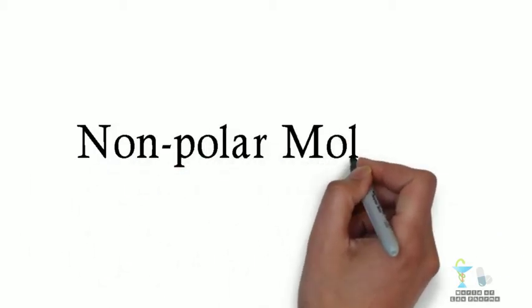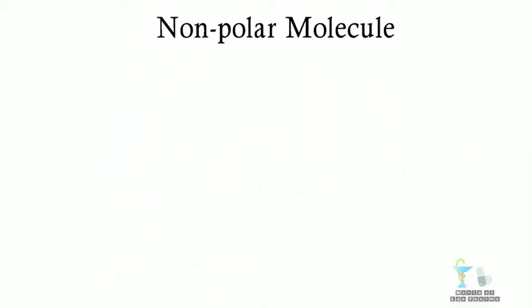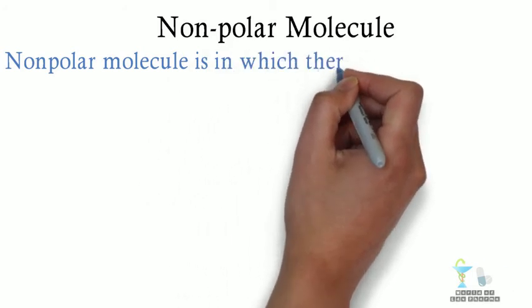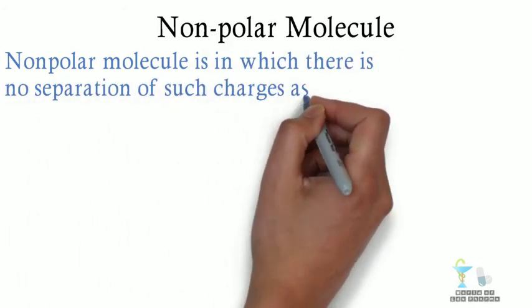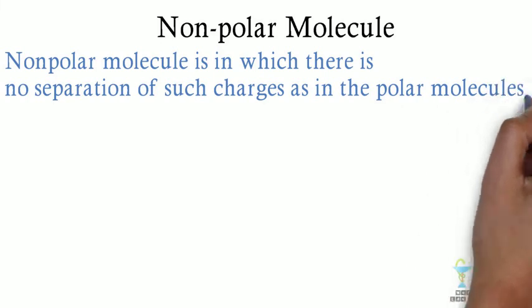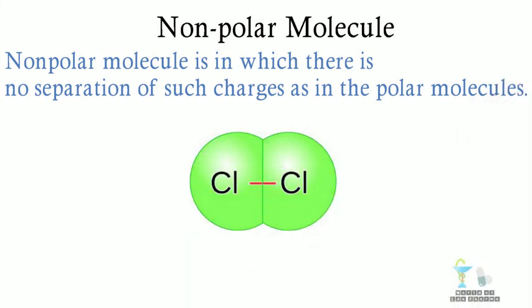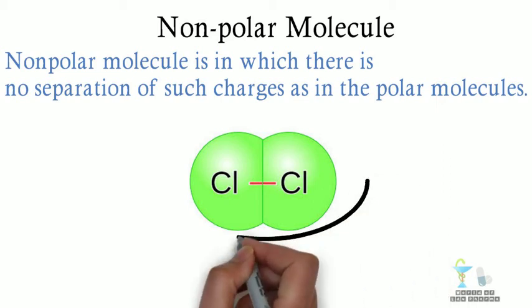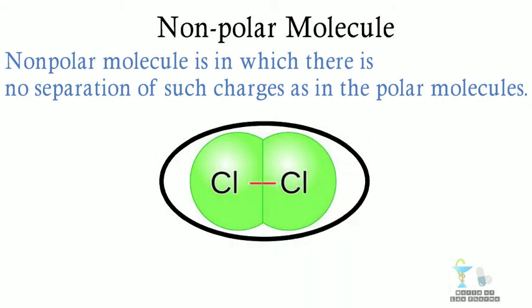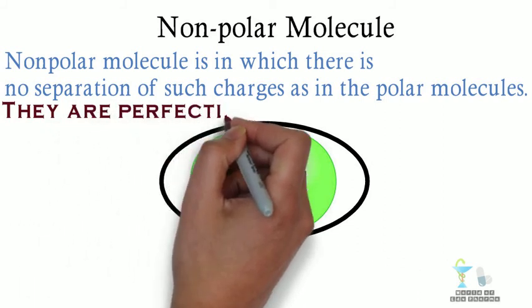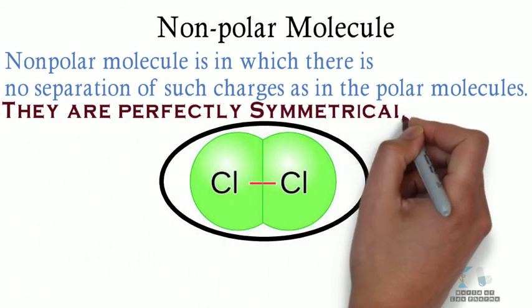The other molecule is non-polar molecule. A non-polar molecule is one in which there is no separation of charges as in the polar molecules, because there is no difference in the electronegativity of the bonded atoms. For example, we can consider Cl2. This is the perfect example for the non-polar molecule. The electron cloud is equally distributed and they are perfectly symmetrical in this molecule.